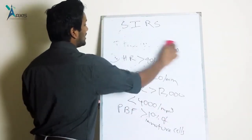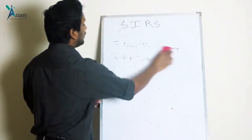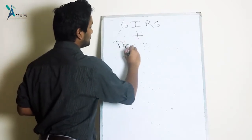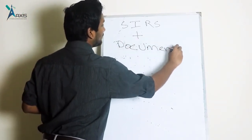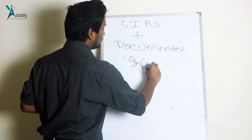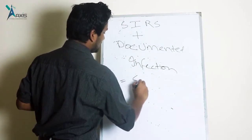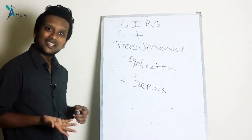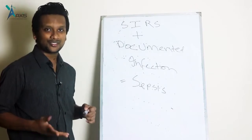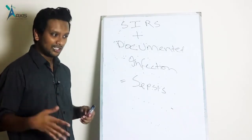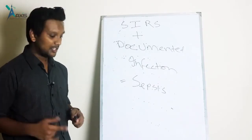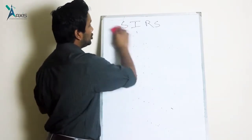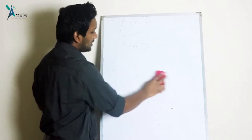Only when SIRS is associated with infection do we call it sepsis. So SIRS plus documented infection is called sepsis. This distinction is important because if a patient shows SIRS features without infection, we should not treat it as infection and give unnecessary antibiotics — that contributes to antibiotic resistance and side effects. We must determine whether SIRS is due to a non-infective condition or an infective condition before calling it sepsis.